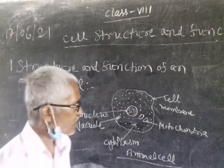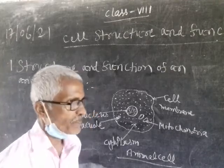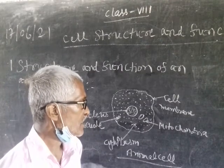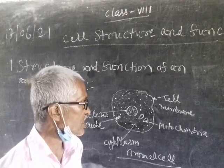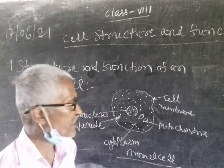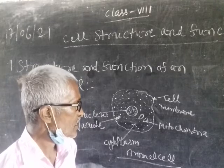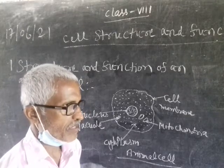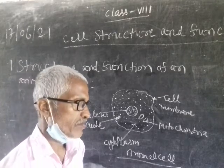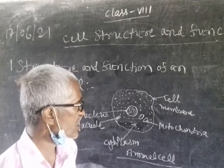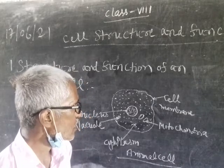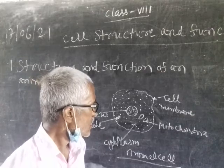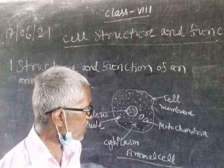The outermost layer of the animal cell is called the cell membrane. Cell membrane is made of living material. It is also known as semi-permeable membrane because some substances can be exchanged through this membrane.